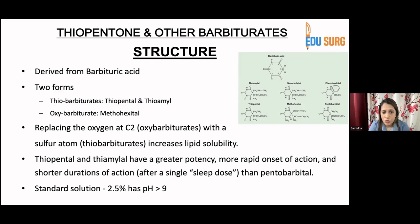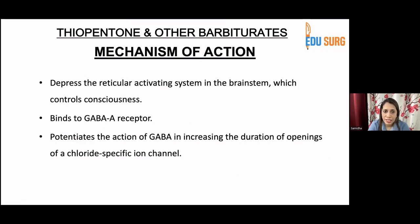The standard solution at 2.5% has a pH of more than 9, so this is a very alkaline pH. Regarding mechanism of action, it depresses the reticular activating system in the brainstem which controls consciousness. It binds to the GABA-A receptor and potentiates the action of GABA by increasing the duration of openings of a chloride-specific ion channel.